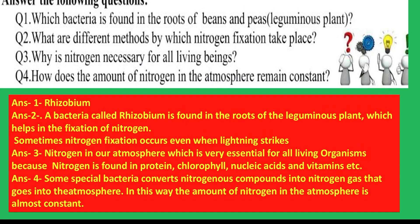Third question: Why is nitrogen necessary for all living beings? — Because nitrogen is found in protein, chlorophyll, nucleic acid, and vitamins. Fourth: How does the amount of nitrogen in the atmosphere remain constant? — Some special bacteria convert nitrogen compounds back into nitrogen gas that goes into the atmosphere, keeping the amount almost constant.